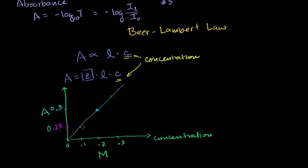You can then go the other way around: you could measure the absorbance of some unknown concentration. Let's say you figure out its absorbance is 0.4. You then go to this line and say, OK, that must correspond to a concentration of — well, whatever number this is. You can measure it or figure it out algebraically. It'll be pretty close to 0.2 molar, a little bit less than 0.2 molar. We're going to actually do an example of that in the next video.